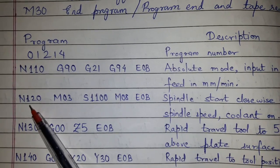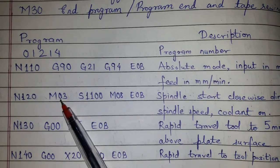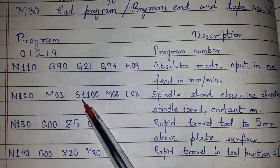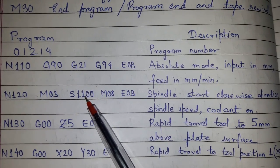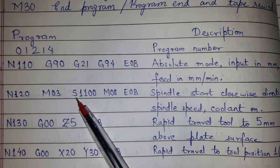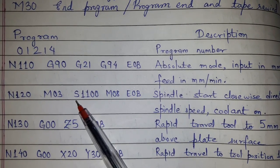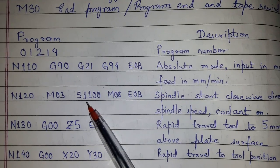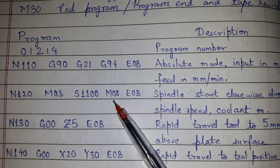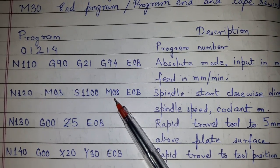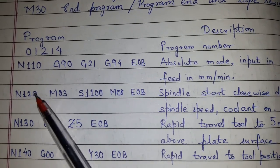In the next block we write M03 to start the spindle, and S1100 to define the spindle speed — you can assume 1000 or 1100 RPM. Then M08 is written to turn coolant on, followed by EOB to end that block.